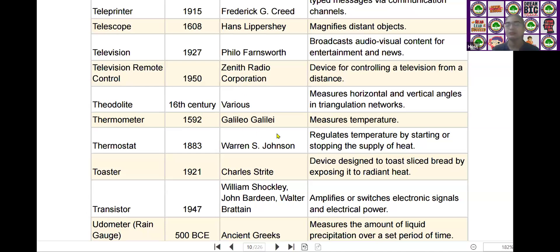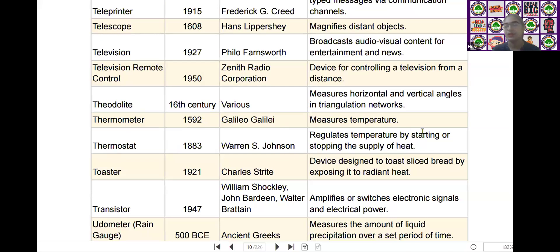The next one is the thermostat. Thermostat was invented by Warren S. Johnson in the year of 1883. It is used to regulate temperature by starting or stopping the supply of heat.